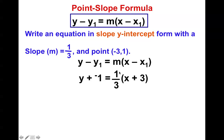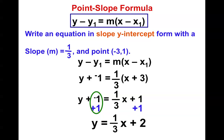When I use distributive property, I end up getting 1 third x plus 1. And then to get y by itself, I go plus 1 and plus 1. And I get my equation.